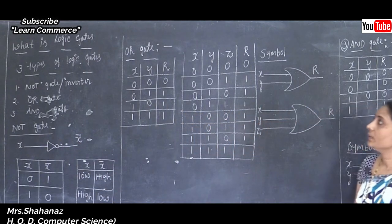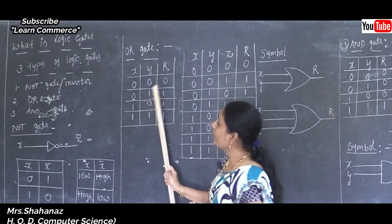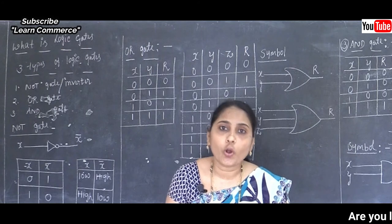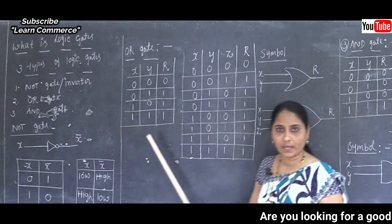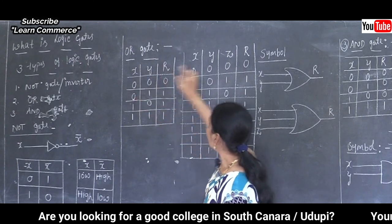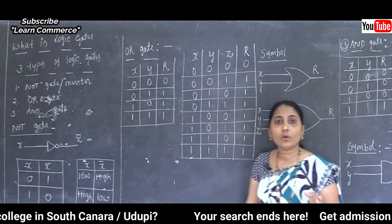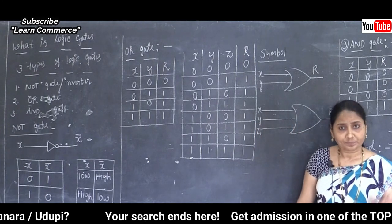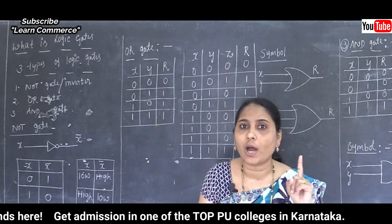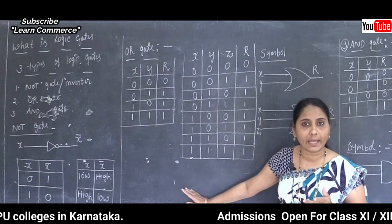Now the second gate: OR gate. OR gate has two or more input signals. In our first table, two input signals are used; in our second table, three input signals are used. It has two or more input signals but only one output signal.